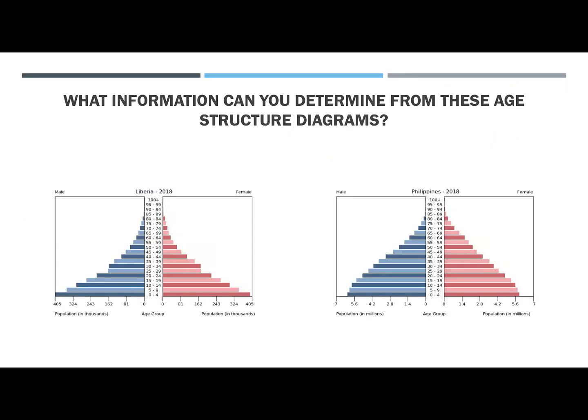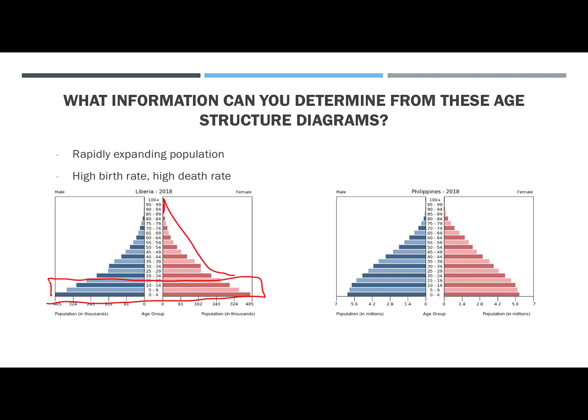What information can you determine from these age structure diagrams? We're comparing Liberia with the Philippines. Liberia has that rapidly expanding population — remember the large pre-reproductive group? It has a high birth rate and a high death rate because it's so steep. Lots of people are born, but not many of them are going to make it to the reproductive group.